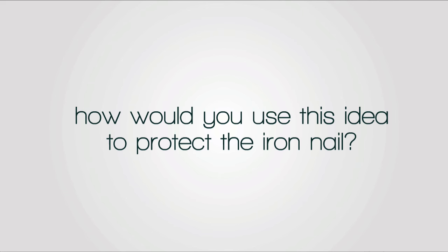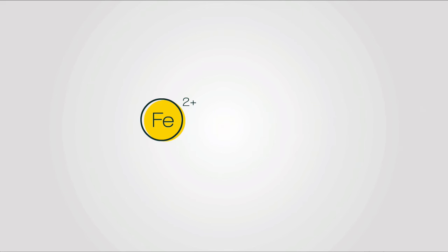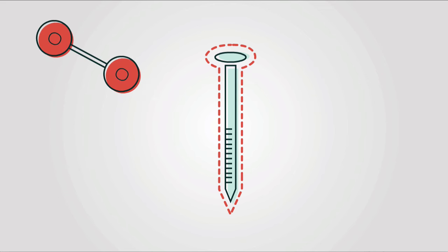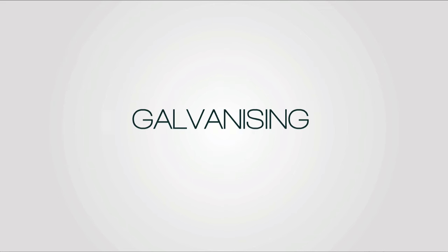The answer is, that by covering a metal like iron with another more reactive metal, like zinc, the zinc forms the zinc oxide layer quickly. The iron underneath is protected. This process is called galvanising and can last up to 100 years.